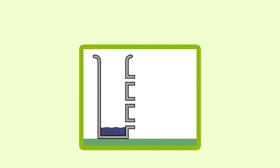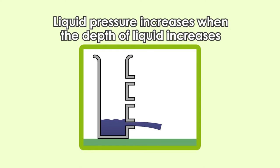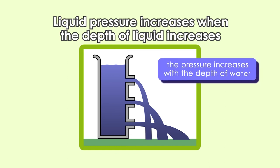On the other hand, the pressure in liquid is different compared to pressure in air. Liquid pressure increases when the depth of liquid increases. As you can see here, the water spouting from the bottom of the container travels the furthest distance. This is because the pressure increases with the depth of water.